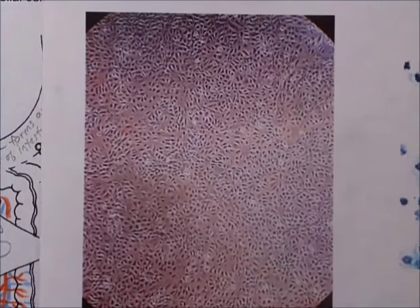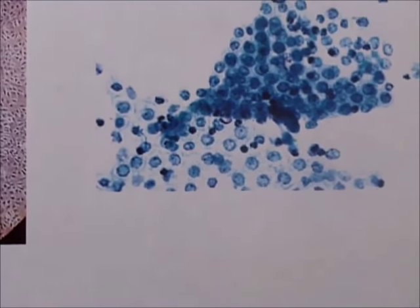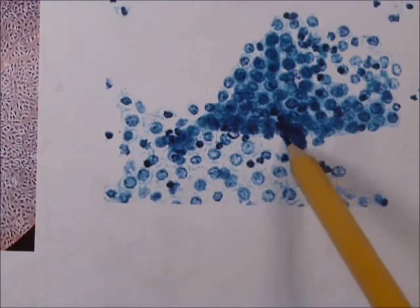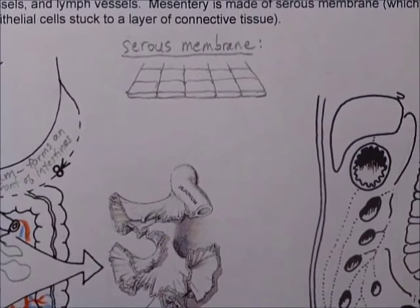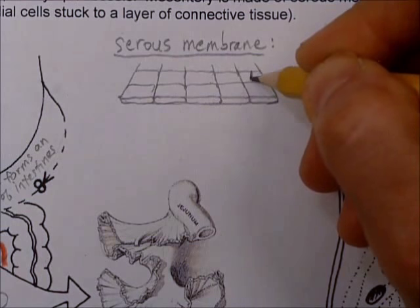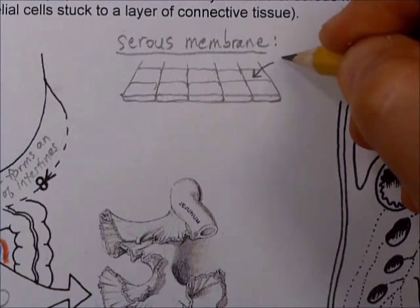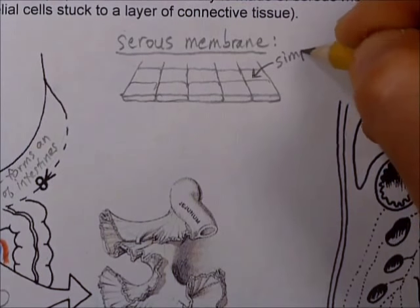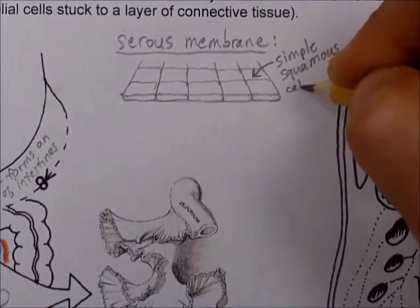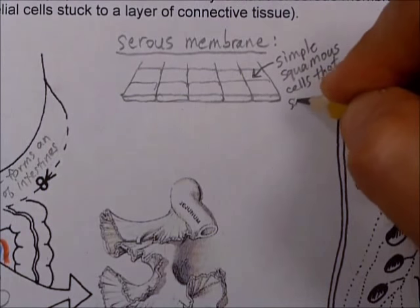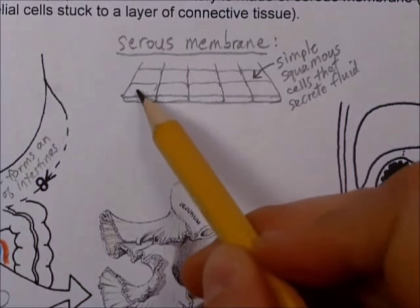Here's what this serous membrane stuff looks like from the top view under a microscope — here's a closer-up top view of these cells; each one of those things is a cell. It's easier to understand if we make them square. What kind of cells do you think these are? From our tissues, when we were classifying tissues — these are simple squamous cells. Very flat. Simple squamous cells that secrete serous fluid.